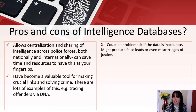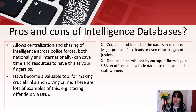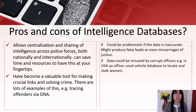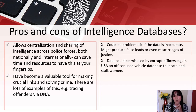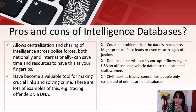Problems: it could be problematic if the data is inaccurate — it might produce false leads or even miscarriages of justice. The data could also be misused by corrupt officers; in the USA, for example, an officer used a vehicle database to locate and stalk women. But that's a very small percentage who misuse it versus all the good it brings. Civil liberties issues also arise: sometimes people only suspected of crimes are on this database. Please watch the clip about the use of intelligence databases.